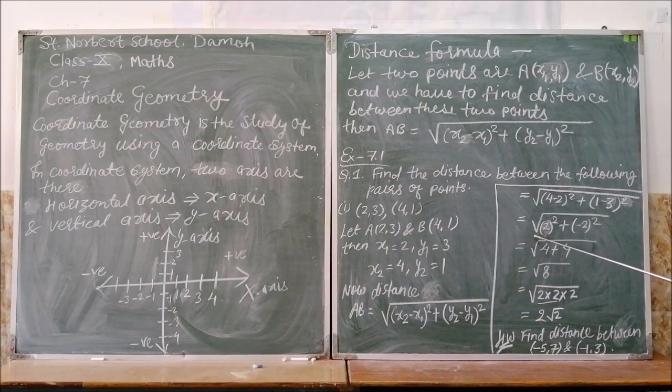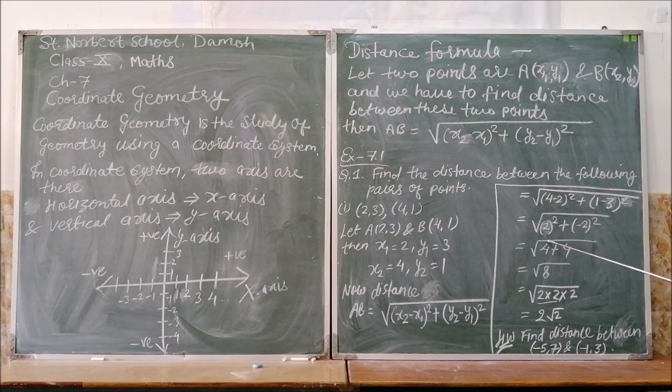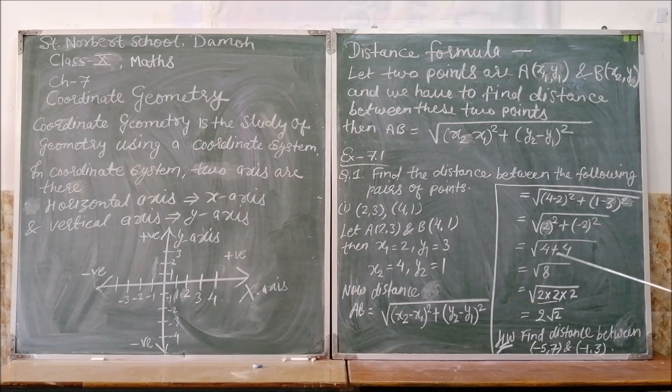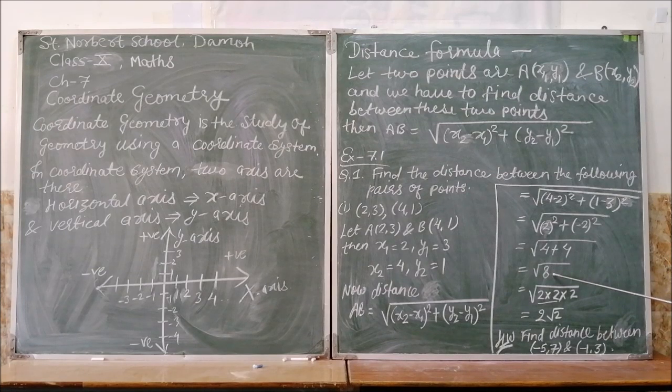This equals under root, now 4 minus 2 becomes 2 square, plus 1 minus 3 becomes minus 2 square. This equals under root 2 square is 4, minus 2 square is also 4, so 4 plus 4 becomes 8.